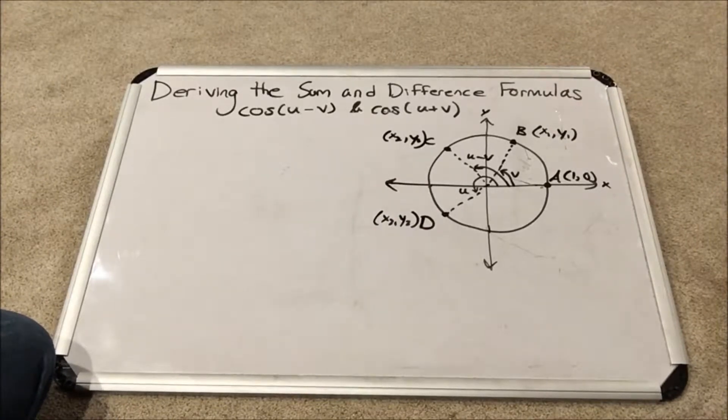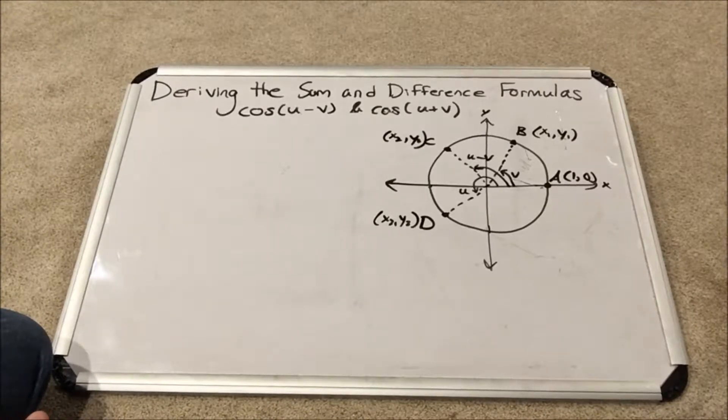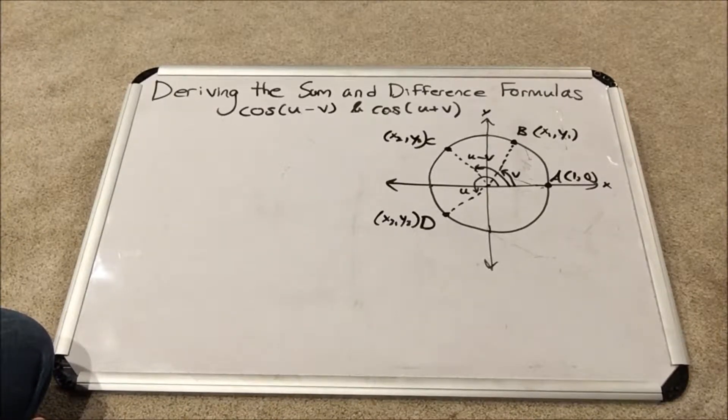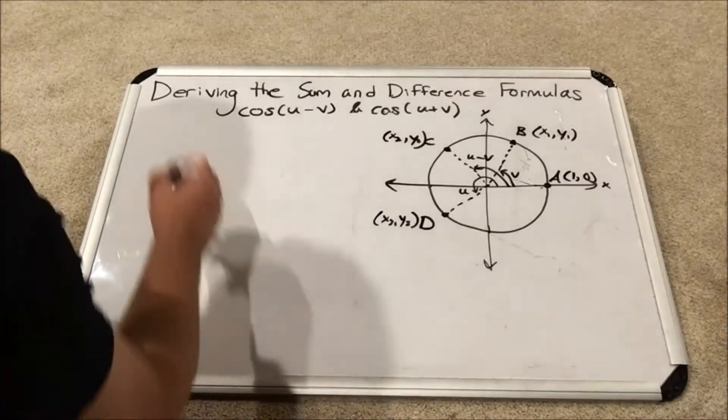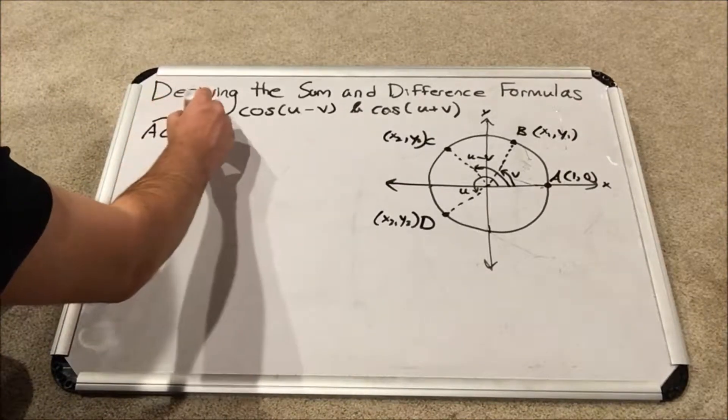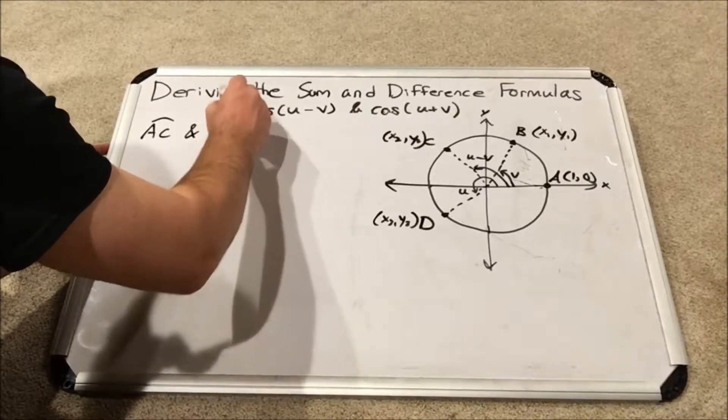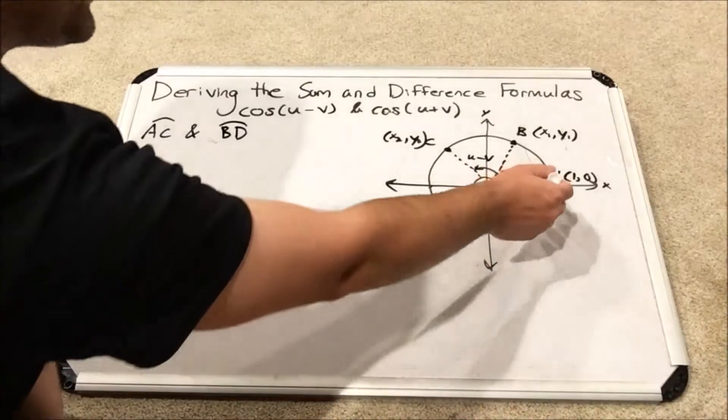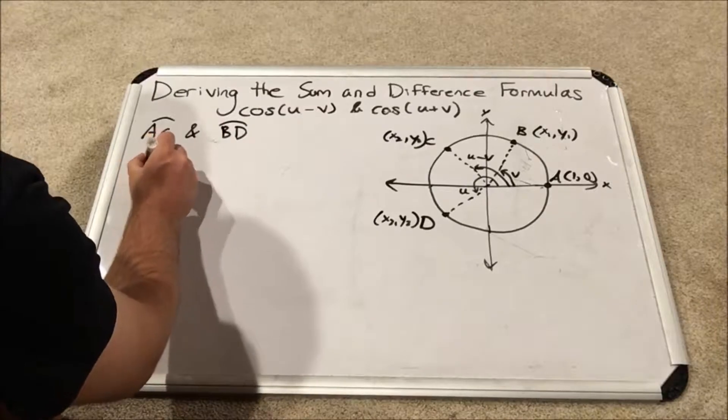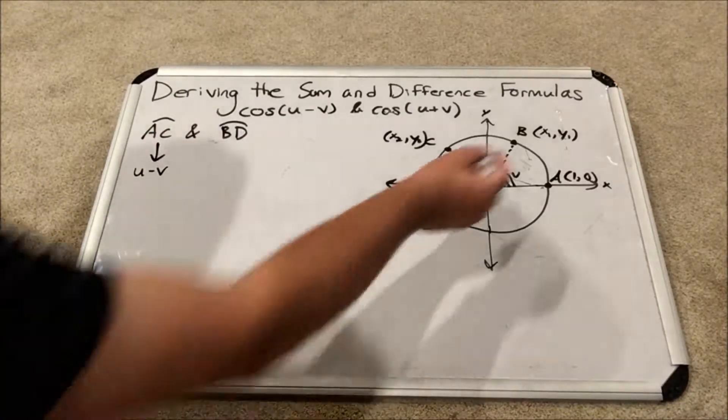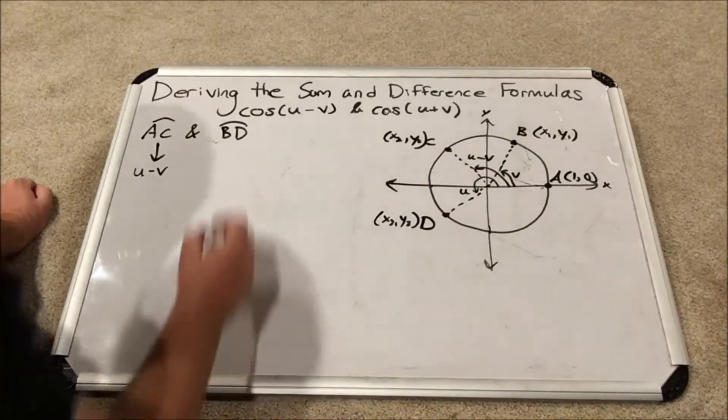So we've set up our unit circle. We've defined the four points we need and the angles we need. Now it's time to discuss something very interesting. Two arcs in particular, arc AC and arc BD. Arc AC, its measure is just angle U minus V. Now if you look at the arc from B to D, we would have to, since we don't have our starting place as a point of reference here, the difference between point D and point B would be angle U for D, and then we just subtract off this portion, which is V.